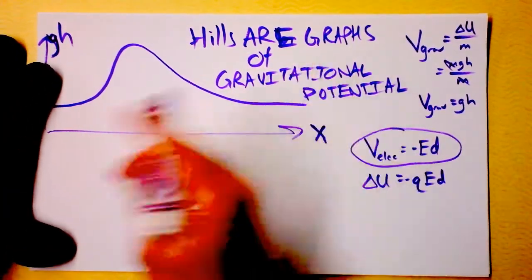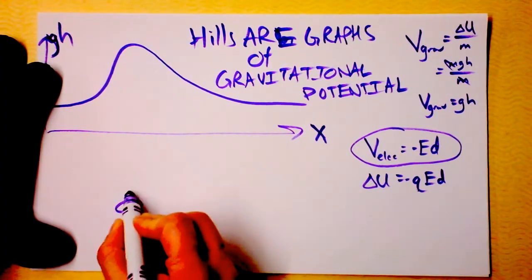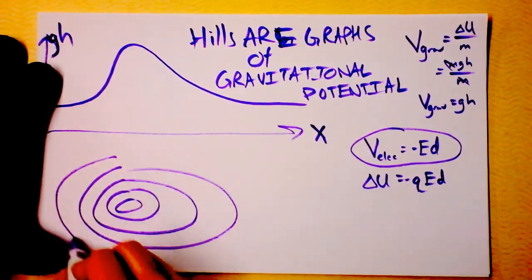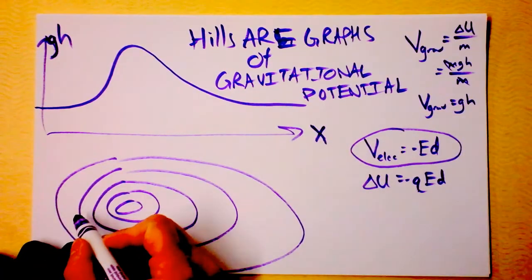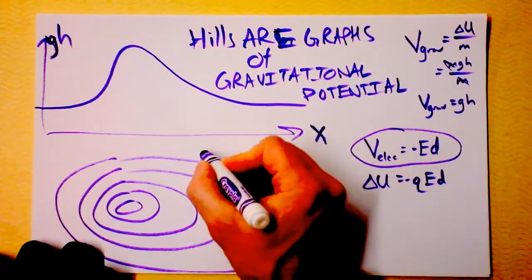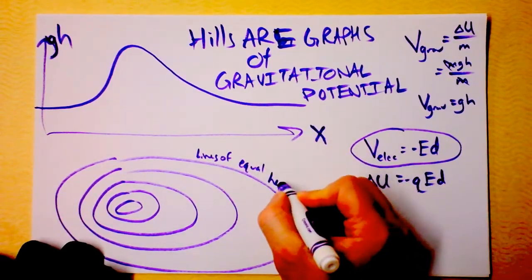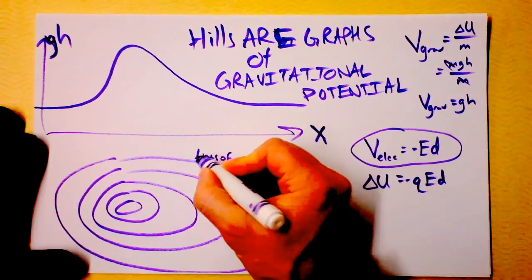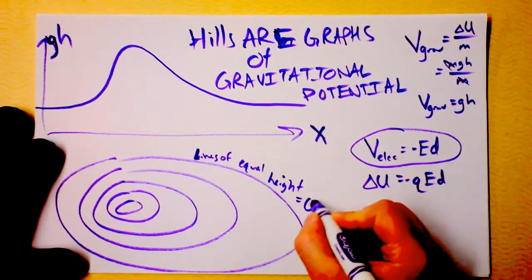Let's say that Newton comes and does some surveying, and he finds that this hill has a particular graph that looks like this. And you see, because of the density of the lines right here — what are these things called? Topographical lines? I want to call them lines of equal height. Altitude, you could call it. These are lines of equal height. Or, if we want to be fancy, we could call them equi-heights.